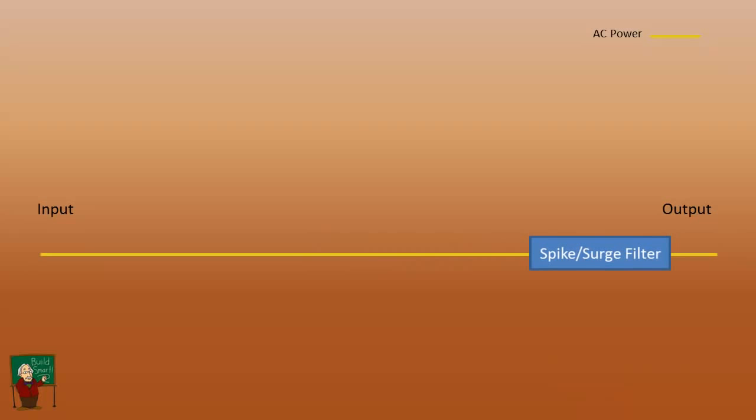Now we'll take the surge filter and move it to the end and take a look at a standby UPS. This is the lowest level of the UPS and basically provides a battery backup.